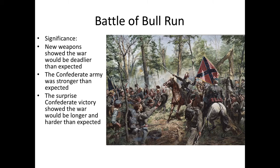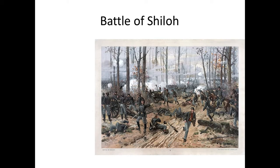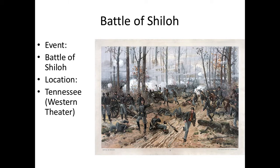On to the next battle: the Battle of Shiloh. The reason I'm talking about this one is because it will establish who becomes the best general for the Union Army — Ulysses Grant. This will take place in southern Tennessee in the Western Theater. The Union is going to win this battle largely because of the leadership of Ulysses Grant, and his right-hand man William Sherman will be involved as well. Eventually Grant and Sherman are going to part ways and do different jobs toward the end of the war.